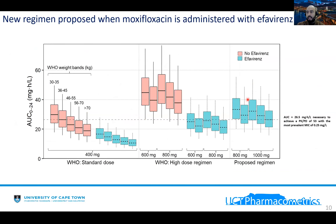That is why we propose a new regimen, shown here in the right panel with boxes. We propose a regimen based on 800 milligrams or 1,000 milligrams of moxifloxacin. For the first two weight bands — up to 45 kilograms — a dose of 800 milligrams should be given to achieve better exposure. The level accepted for total AUC is 26.5 mg·h/L, which is necessary to achieve a PK/PD of 53 considering an unbound fraction of 50% for moxifloxacin. For heavier patients — 46 kilograms up to 70 kilograms — the regimen should be 1,000 milligrams of moxifloxacin in order to get better exposure.